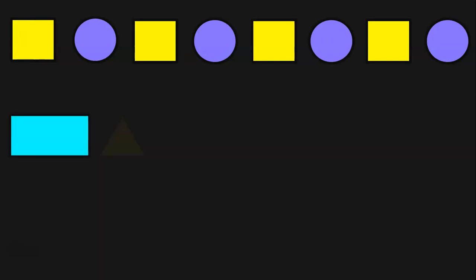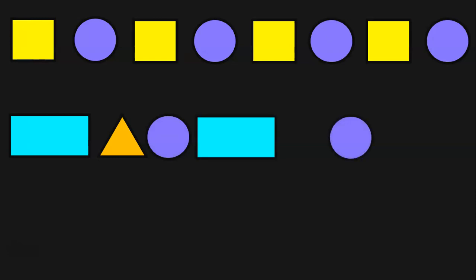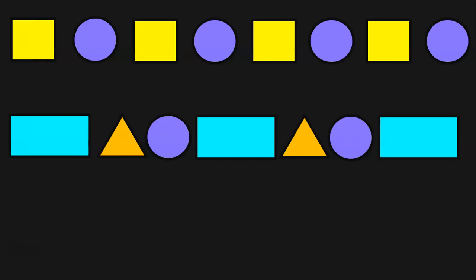Here we have a rectangle followed by a triangle and then a circle. Next, we have a rectangle, a space, followed by a circle. So what will be there in between? We saw that the pattern is created using rectangle, triangle and a circle. So we have to fill it up with a triangle in between. Next, it will end with a rectangle once again — rectangle, triangle, circle, rectangle, triangle, circle — and then once again it moves on to a rectangle. So I have ended it with a rectangle.